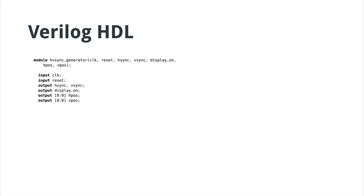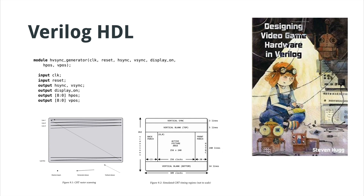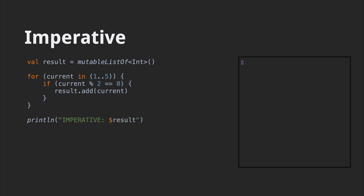It doesn't get much more declarative than this. The code sample here is part of a program that allows you to drive a signal to an old-school CRT. It's from a book called Designing Video Game Hardware in Verilog — surprisingly approachable and not too expensive if you want to grab a digital copy. So those are two of the most extreme examples of reactive programming out there.